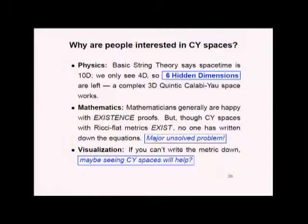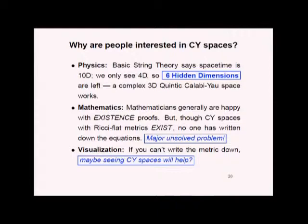That is where the interest comes from. Although there are more advanced versions of string theory that work in 11 dimensions, referring to the basic string theory with ten-dimensional space-time, since we only see four dimensions — three dimensions in space and one in time — there have to be ten minus four, or six, remaining dimensions. The Calabi-Yau quintic polynomial works as one of a very large number of alternatives; this is simply the simplest and the most photogenic.